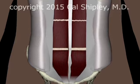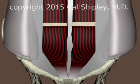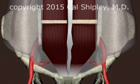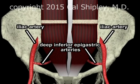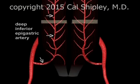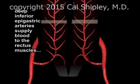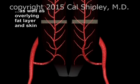Now let's take a look at the blood supply to the rectus muscles. Blood flow to the rectus muscles arises from the deep inferior epigastric arteries, which themselves arise from the iliac arteries in the pelvis. The deep inferior epigastrics not only supply blood to the rectus muscles, but also to the overlying fat layer and skin of the abdominal wall.